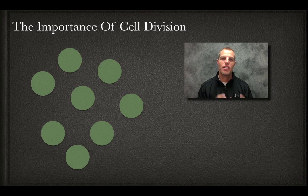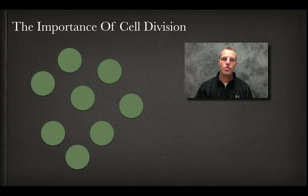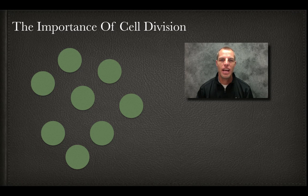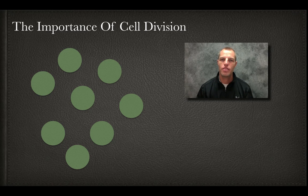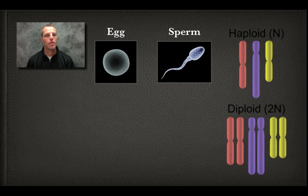Cell division, especially with mitosis in body cells — which is what we're mainly looking at today — is going to occur and produce cells that are genetically identical and have the same DNA. All of our cells have that because they've all replicated from an original cell. To understand the concepts we're going to be looking at in this unit on cell division, we have to understand the idea of haploid and diploid.